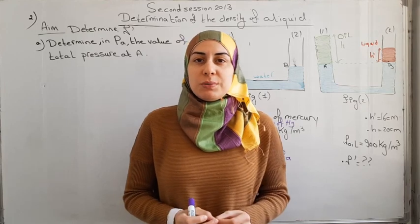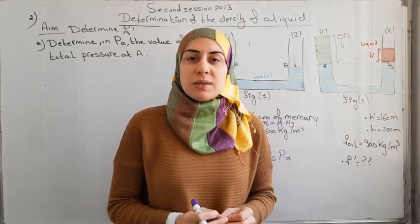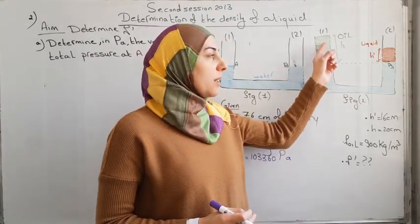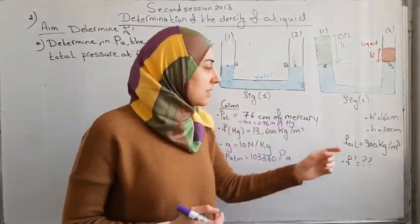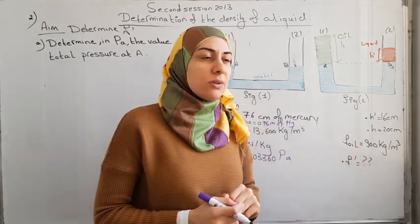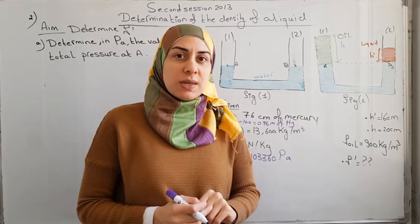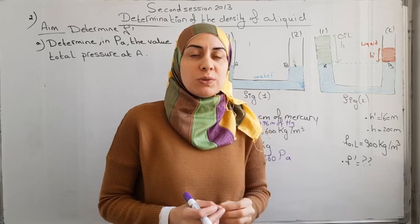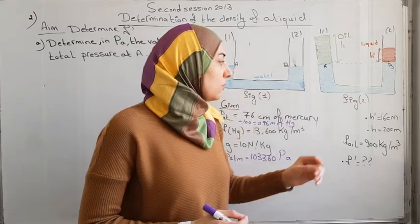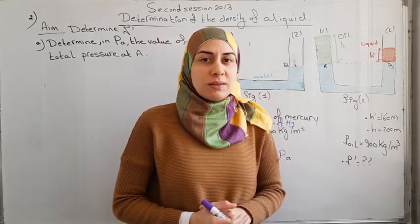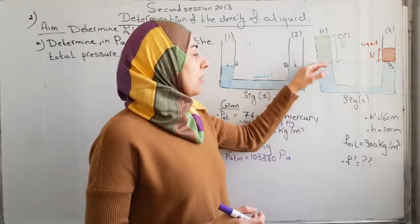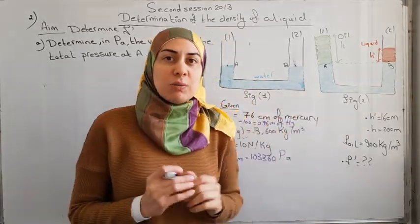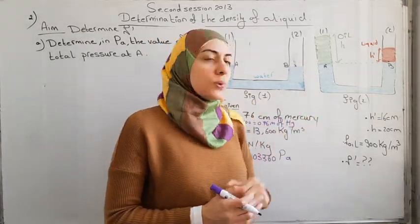In this part, we want to determine the density rho prime of an unknown liquid that doesn't mix with water. For this reason, we pour into the first branch of the U-tube an amount of oil of density 900 kilograms per cubic meter to a height of 20 centimeters. In the second branch, we pour some quantity of the liquid whose density we want to determine, to a height h prime equals 16 centimeters. The surface of separation water-oil and the surface of separation water-liquid are at the same horizontal level, as shown in figure 2.